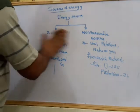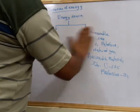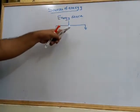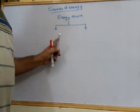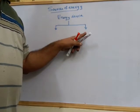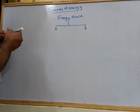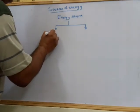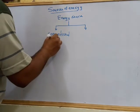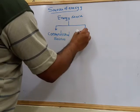After classifying energy into renewable and non-renewable, we can again divide energy sources into two more broad types. Based on this classification, energy sources are divided into conventional sources and non-conventional sources.